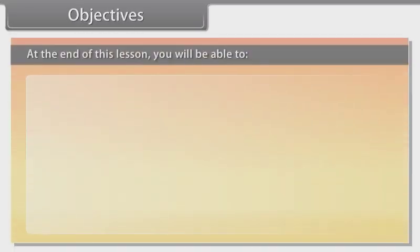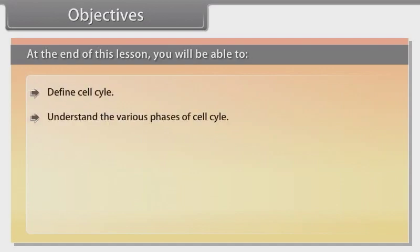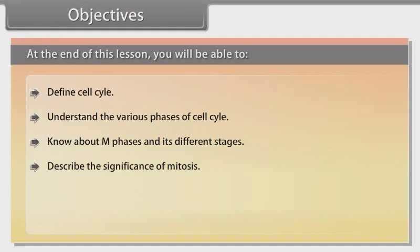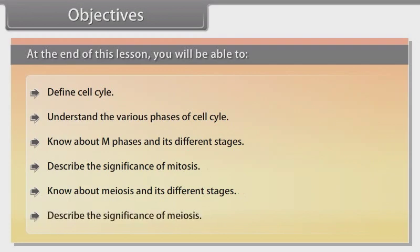At the end of this lesson you will be able to define cell cycle, understand the various phases of cell cycle, know about M phase and its different stages, describe the significance of mitosis, know about meiosis and its different stages, and describe the significance of meiosis.